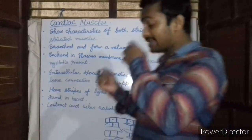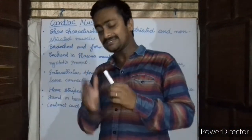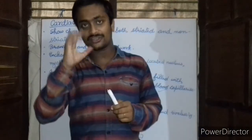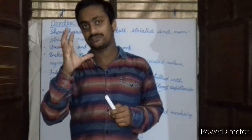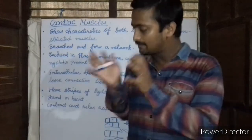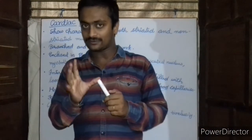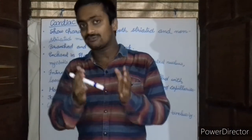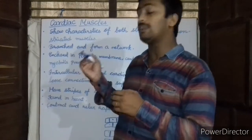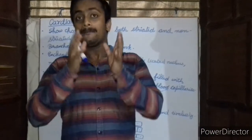These cardiac muscles are especially found in the heart. They are capable of rapid contraction and relaxation, and that is why they help the heart in the contraction and relaxation of muscles as well as in the pumping of blood. So this was all about the three types of muscle tissues.